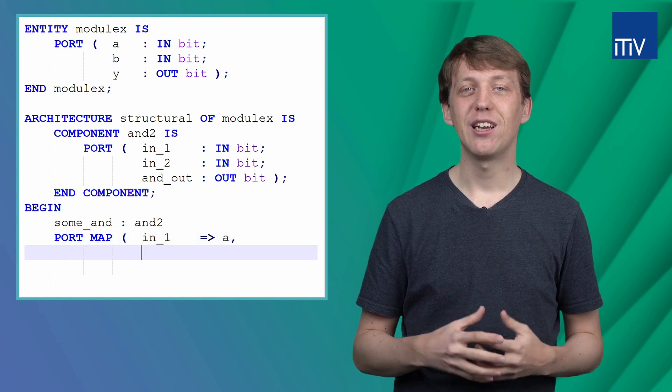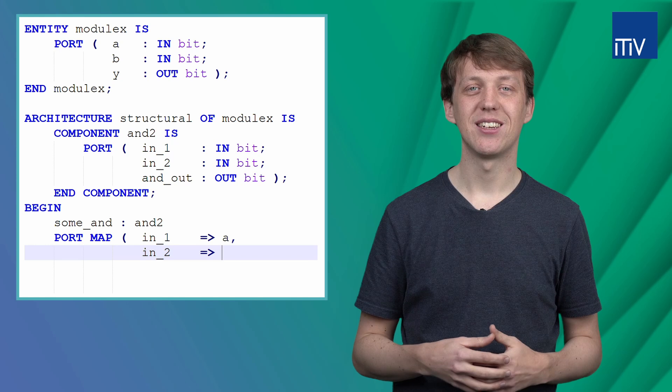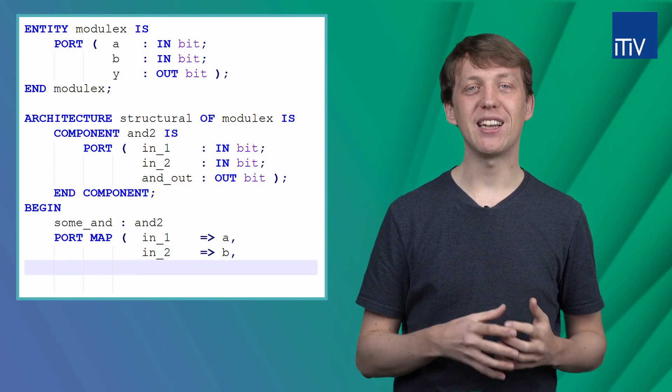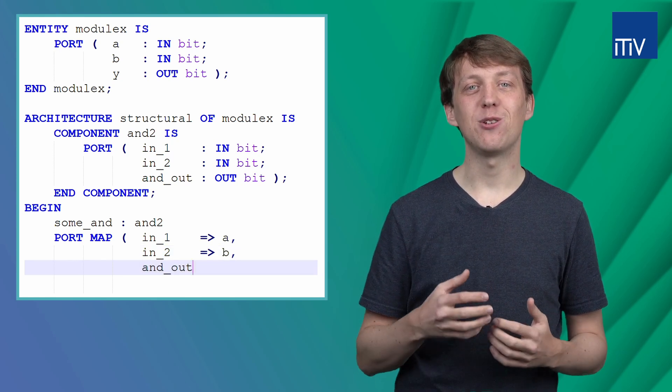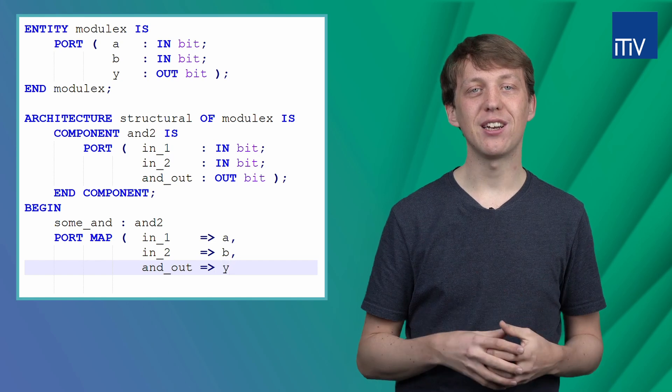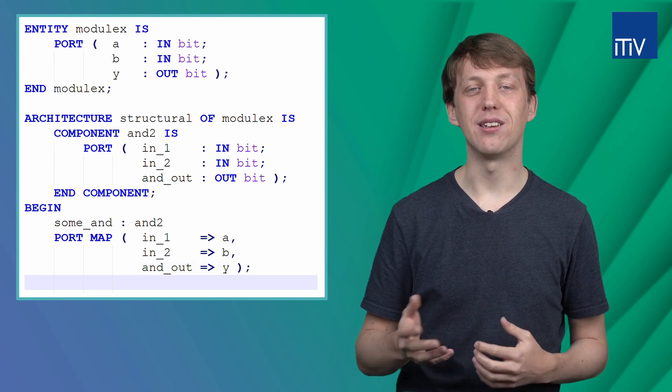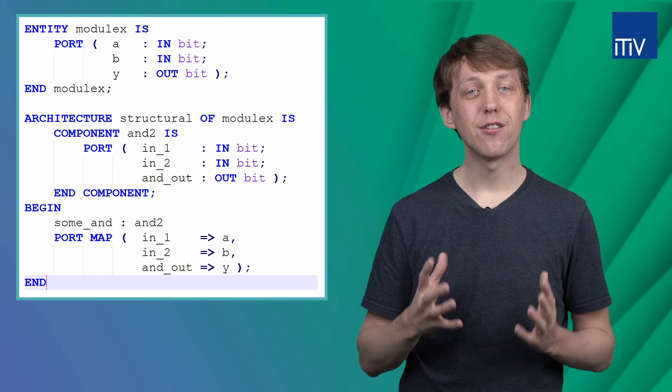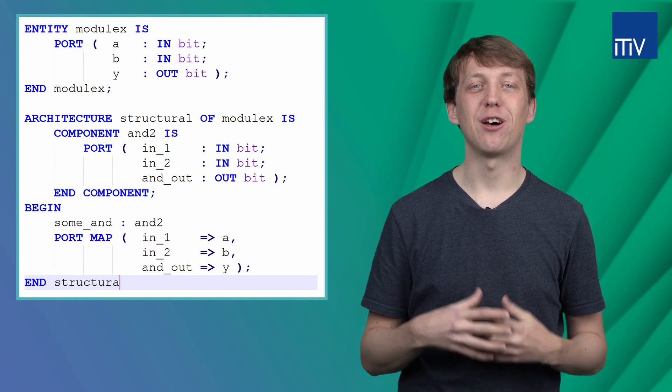Therefore, we have to use the assignment statement again. The output port of the AND gate can be connected to the output port of the design, which is called Y in this case. Finally, we end the description of the architecture. And that's it.